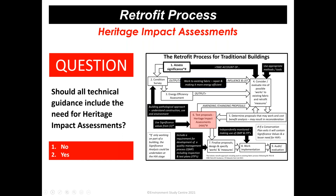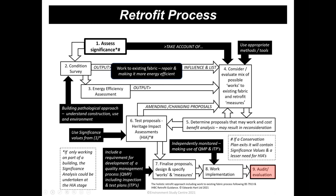Then we come to step seven — finalise our proposals, design the work, specify the work and the measures. After step seven, we come to step eight, where the work is implemented. There should be a proper process in terms of quality control, audits, inspection and test plans as part of that installation process. Then step nine is the audit and post-occupancy evaluation. The post-occupancy evaluation is critically important. It's intrinsically important that we do a proper building survey and proper analysis of the building before we do anything to it at all.